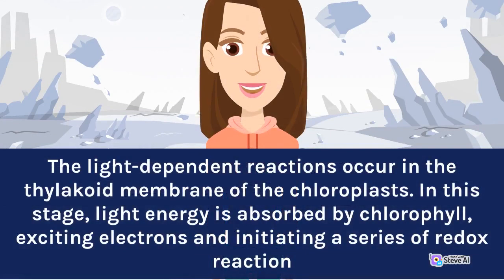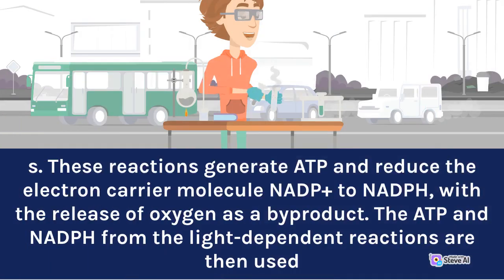The light-dependent reactions occur in the thylakoid membrane of the chloroplasts. In this stage, light energy is absorbed by chlorophyll, exciting electrons and initiating a series of redox reactions. These reactions generate ATP and reduce the electron carrier molecule NAD+ to NADPH, with the release of oxygen as a byproduct.